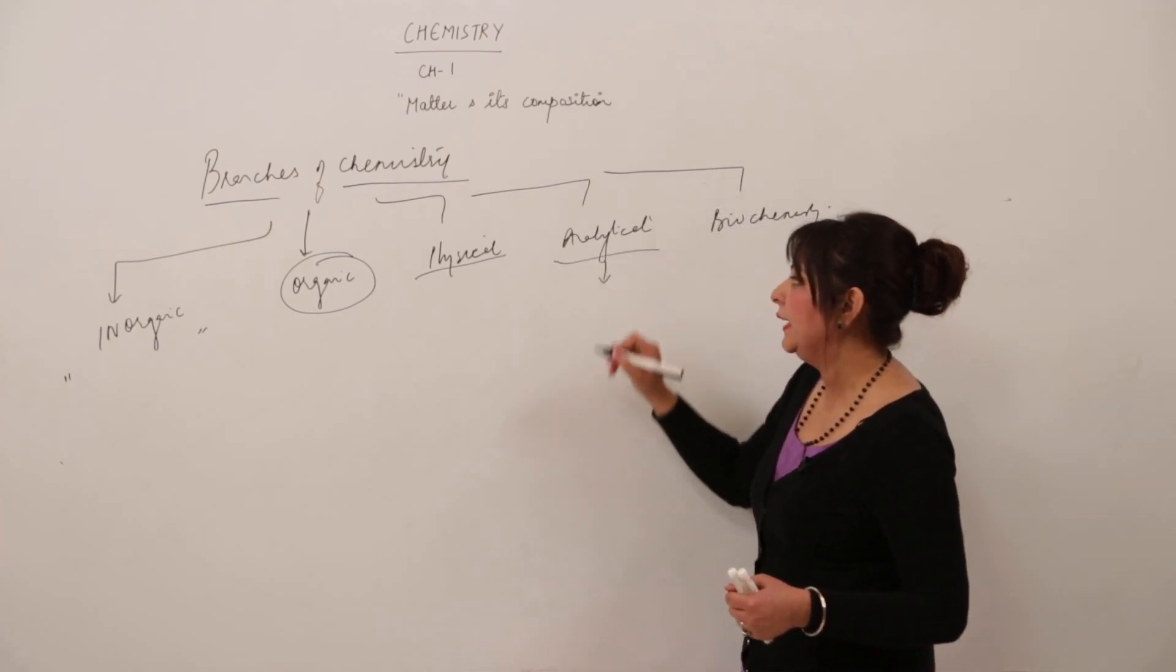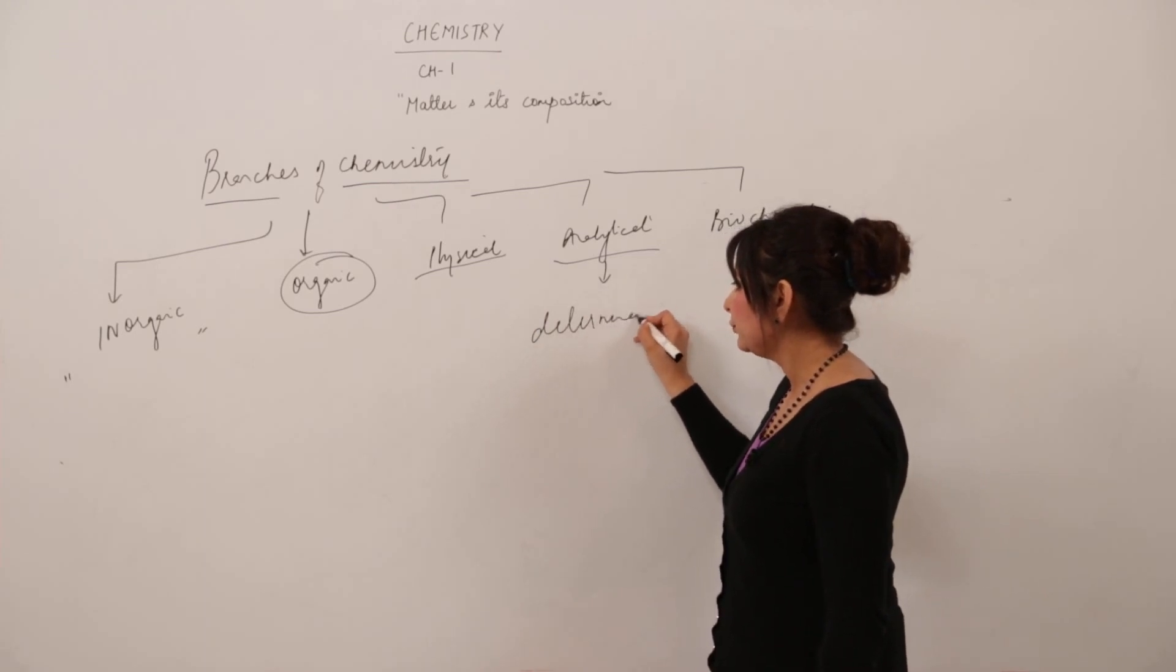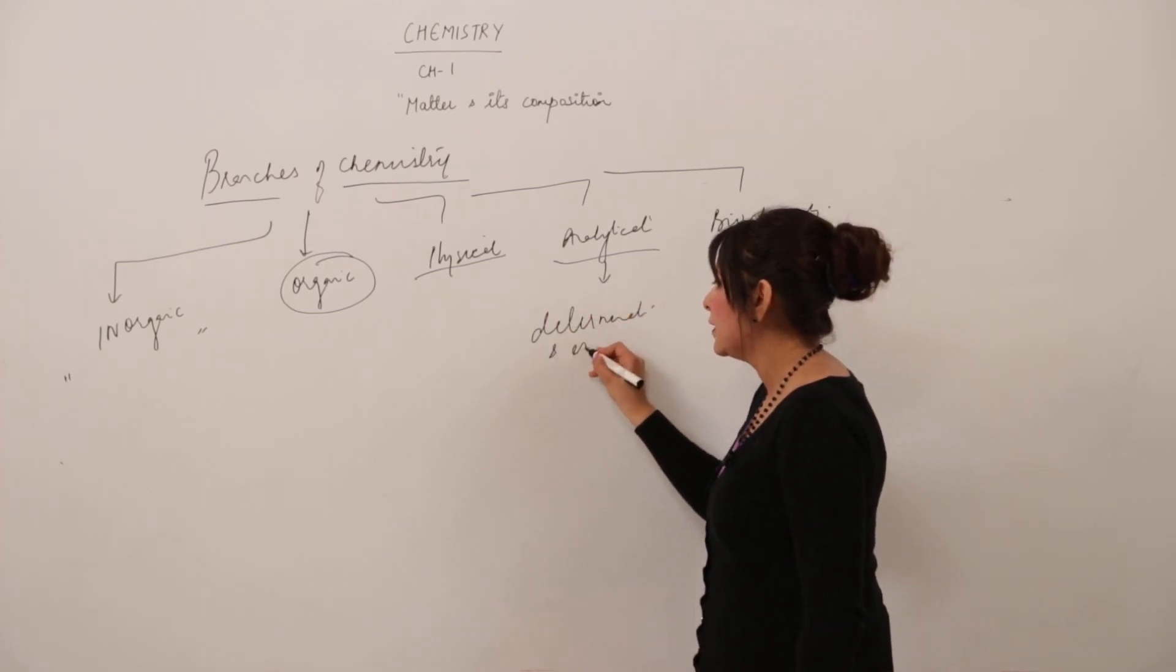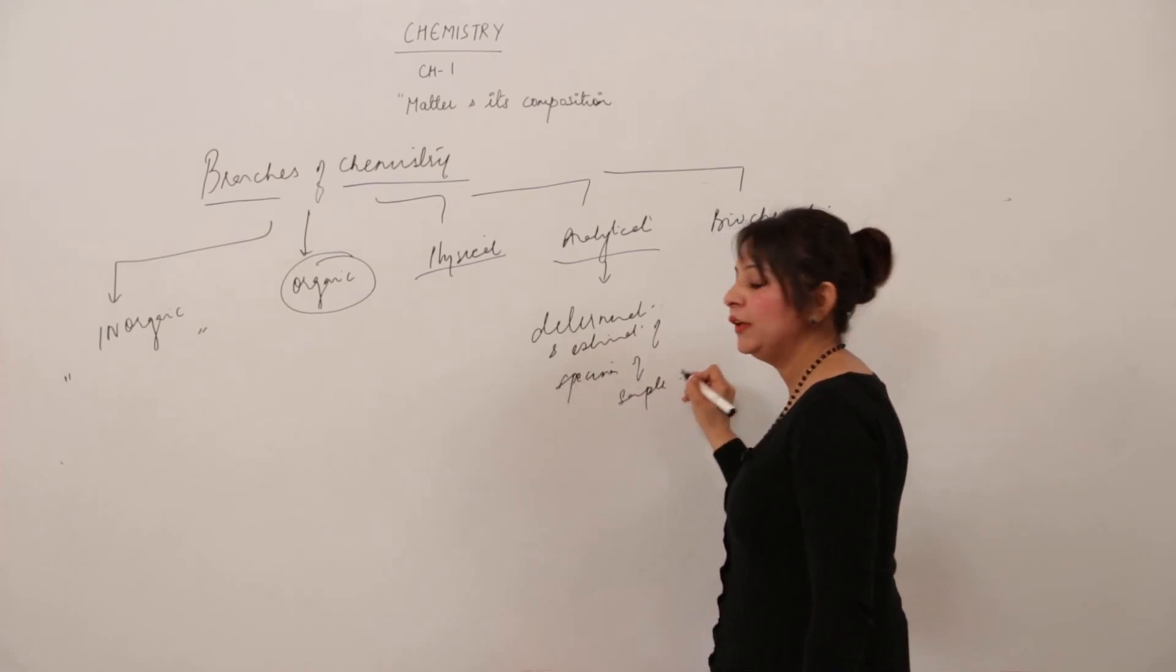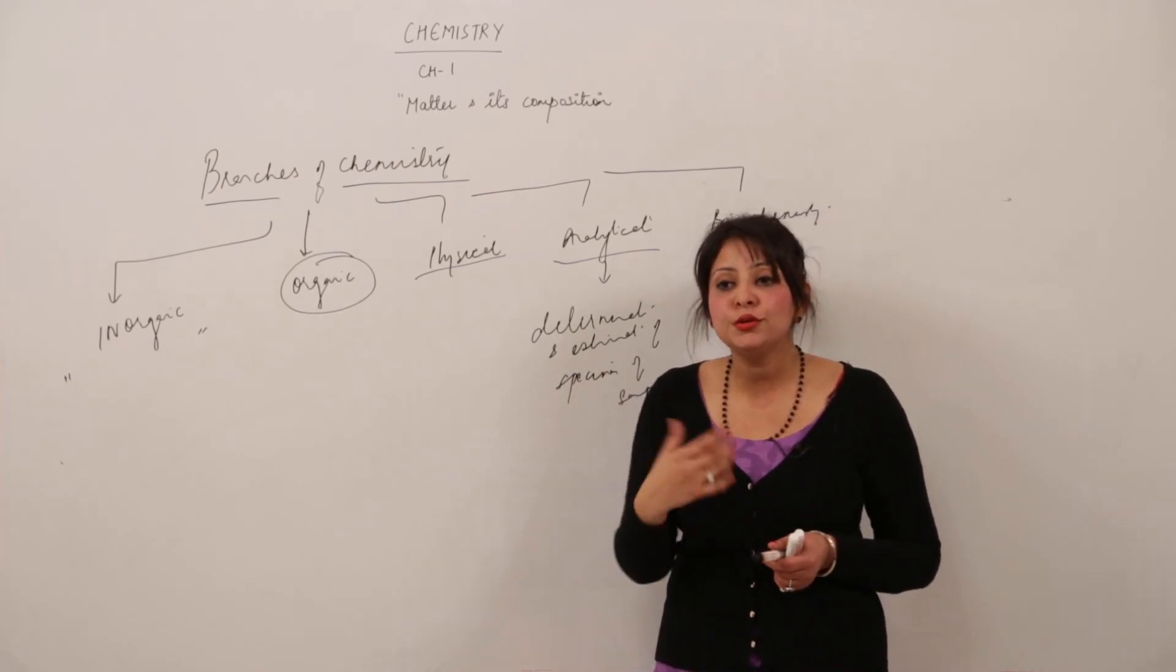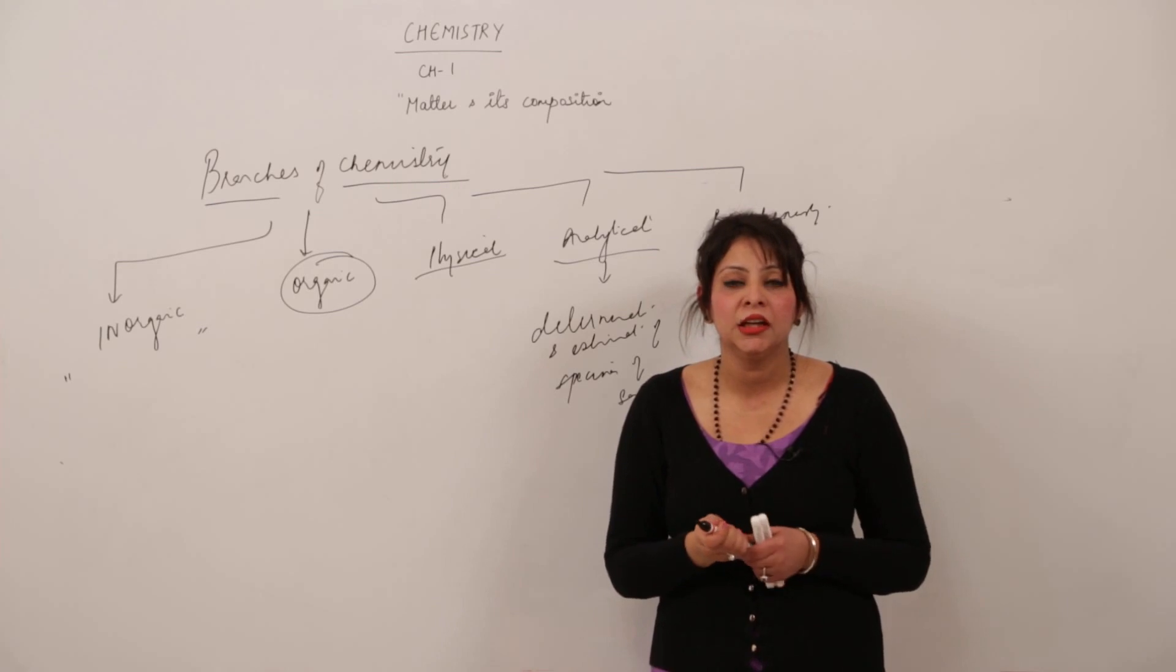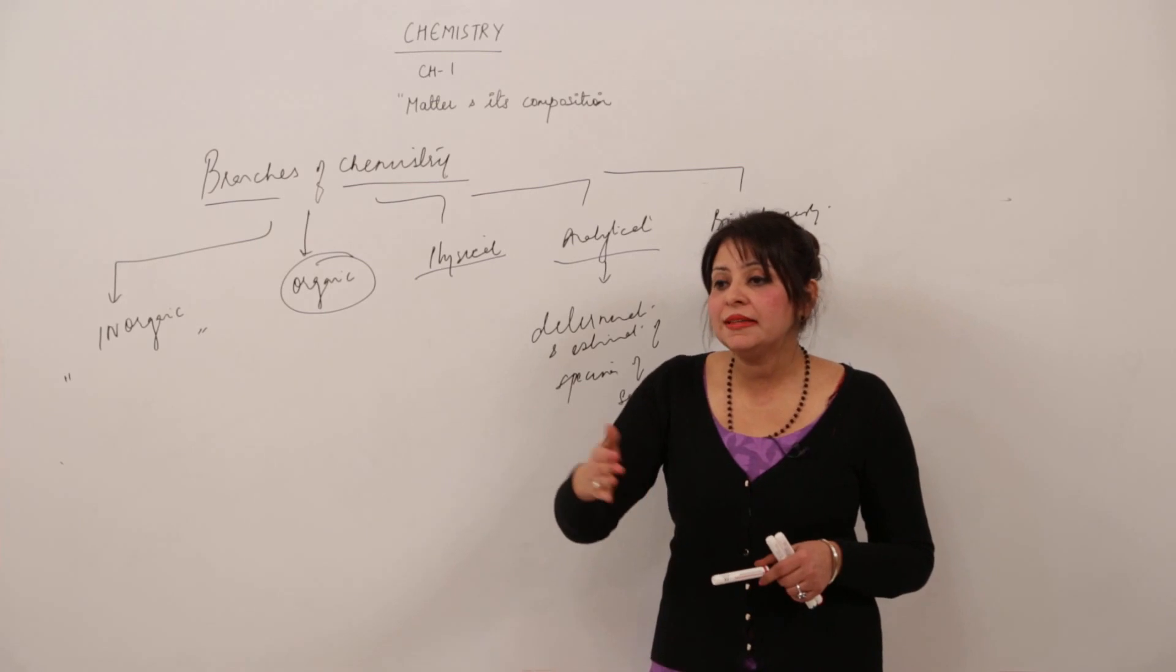Analytical chemistry deals with the determination and estimation of specimens in samples. Now what is that? I'll give you an example. Suppose I'm giving you some sample and I want you to know which element it contains. You will have certain tests to perform by which you can know that this element is present in it.